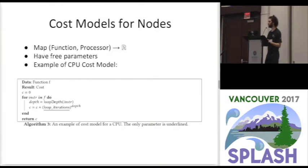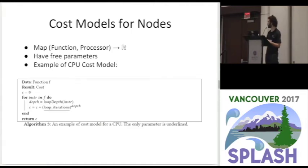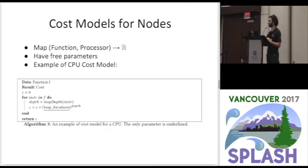A cost model for nodes is a function mapping a (function, processor) pair to a real number, possibly with free parameters. For a CPU cost model, a simple example iterates over all instructions in the function, calculates the loop nesting depth containing each instruction, and computes loop_iterations to the power of depth, summing that as total cost. So if an instruction is in one loop, we add loop_iterations to the cost; in a doubly nested loop, we add loop_iterations squared, and so on.